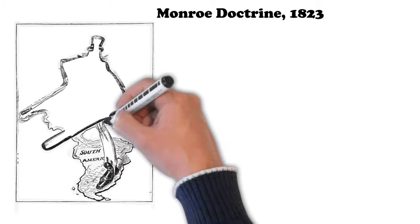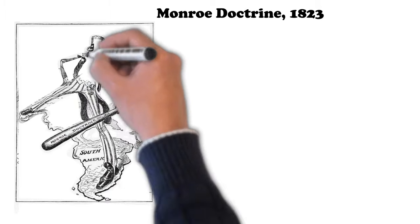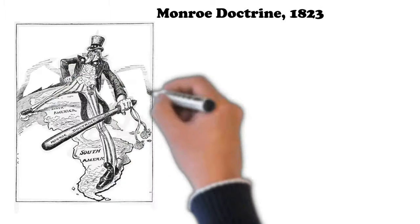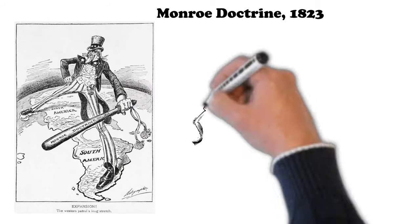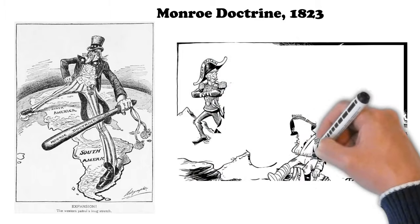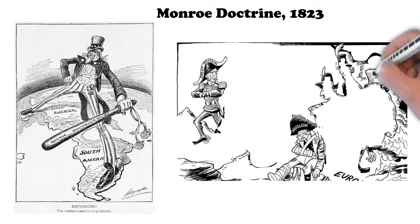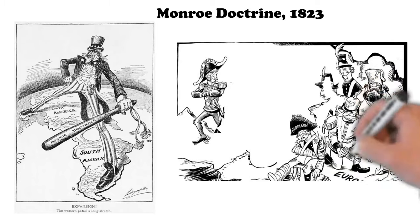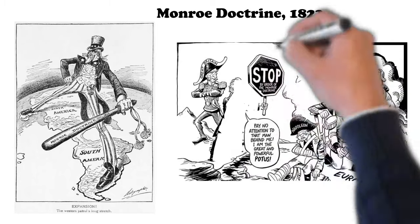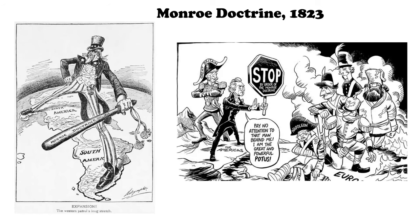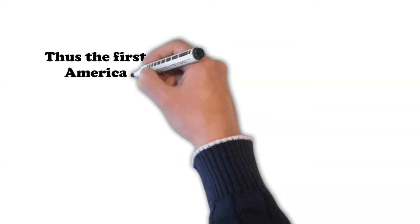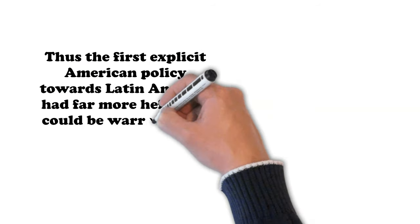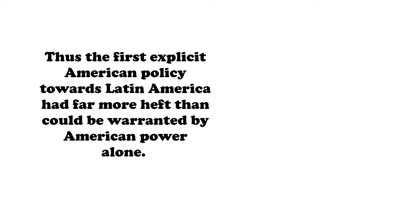The new diplomatic policy, announced in 1823, held that any intervention in the politics of the Americas by foreign powers was a potentially hostile act against the United States. It was a bluff, of course, since the U.S. did not have the means to enforce its declaration, but it did have the backing of the British, who wanted other European powers weaker and free trade with the newly independent Latin American regimes. Thus, the first explicit American policy towards Latin America had far more heft than could be warranted by American power alone.